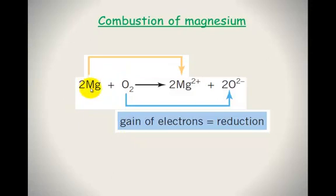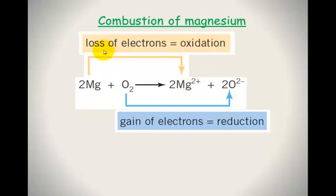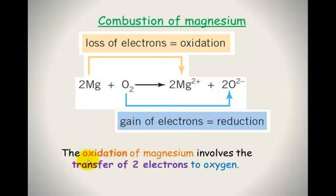On the other hand, we have magnesium, which has a neutral charge, going to a 2+ charge. So this must have lost electrons — oxidation is loss of electrons, reduction is gain of electrons. You can say in a sentence that the oxidation of magnesium involves the transfer of 2 electrons to oxygen. Oxygen has gained the 2 electrons that magnesium has lost in this reaction.